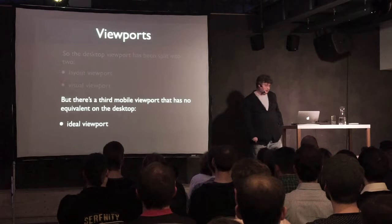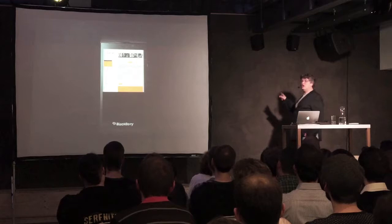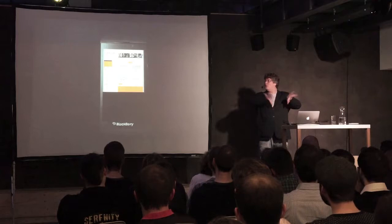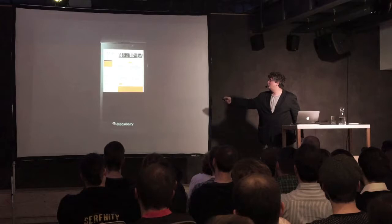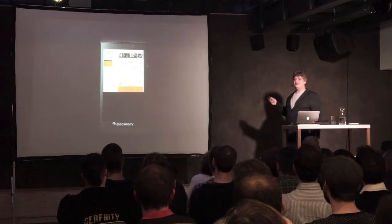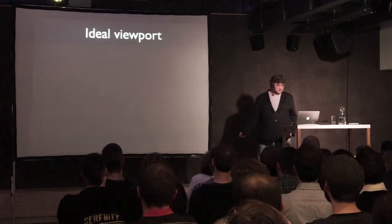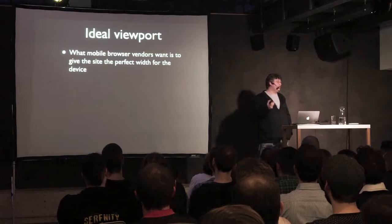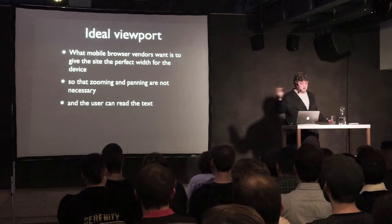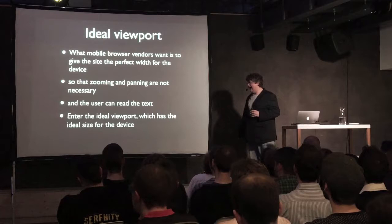What is the ideal viewport? When an actual mobile browser downloads an actual desktop-optimized website, it usually zooms out as much as possible to give the user an overview of the site. The text is unreadable, but you can see the navigation, main content, speaker photos, and zoom into what you want. This is not ideal, but it's the least bad thing mobile browsers can do to a desktop website. However, what they want to do is create a website with the perfect width for the device it's being viewed on, so the user doesn't have to zoom or pan — and can read the text immediately.